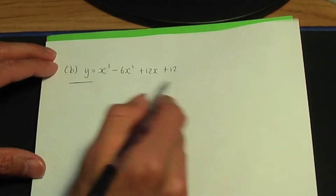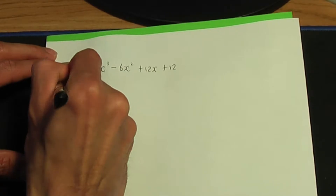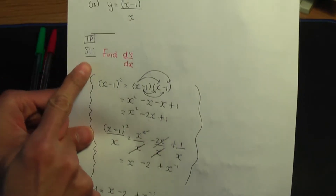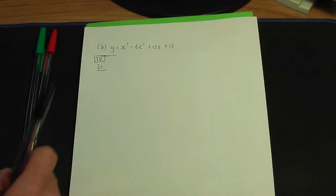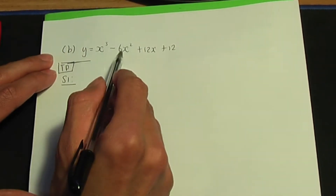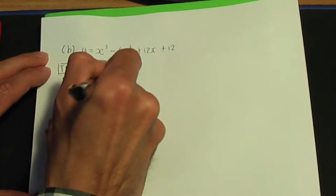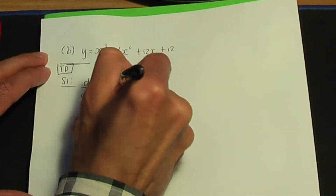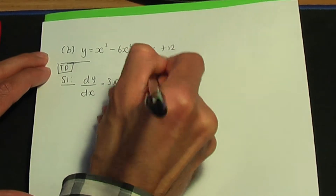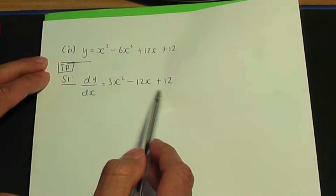Here is our equation. Step number one: let's work out the turning points. Referring to the previous example, step number one is to find dy over dx. So, y is x cubed minus 6x squared plus 12x plus 12. When I differentiate, dy over dx will be 3x squared minus 12x plus 12. That is what you should have for the first derivative.